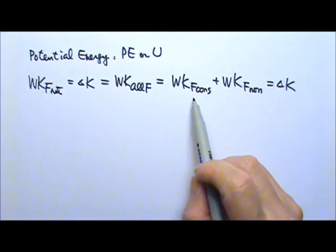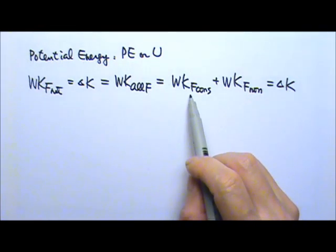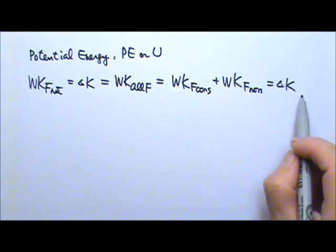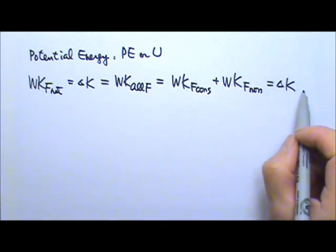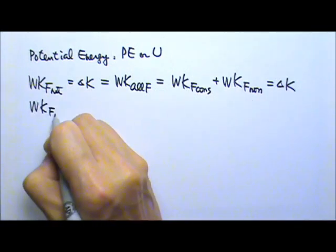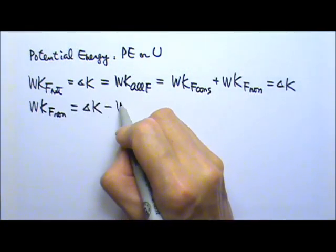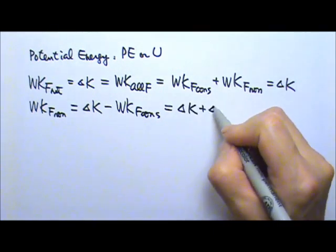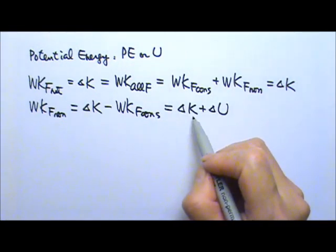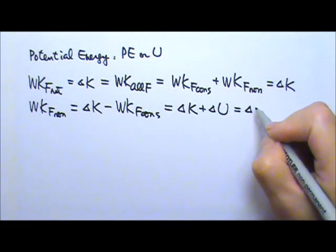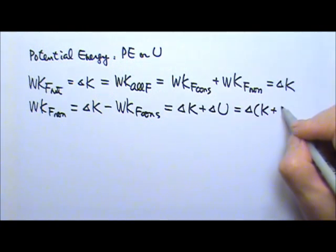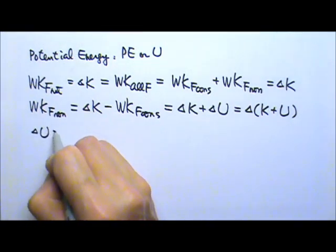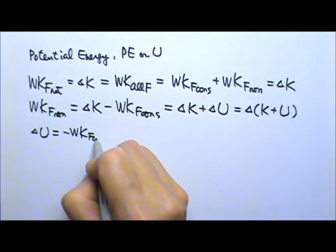Because the work done by conservative forces does not depend on the path it takes, we're going to define a potential energy for it. I'm going to move it to the other side to be with the kinetic energy. The equation then becomes: the work done by the non-conservative force equals the change in kinetic energy minus the work done by the conservative force. This becomes the change in kinetic energy plus the change in potential energy. So the definition of potential energy is: the change in potential energy equals the negative work done by the conservative force.